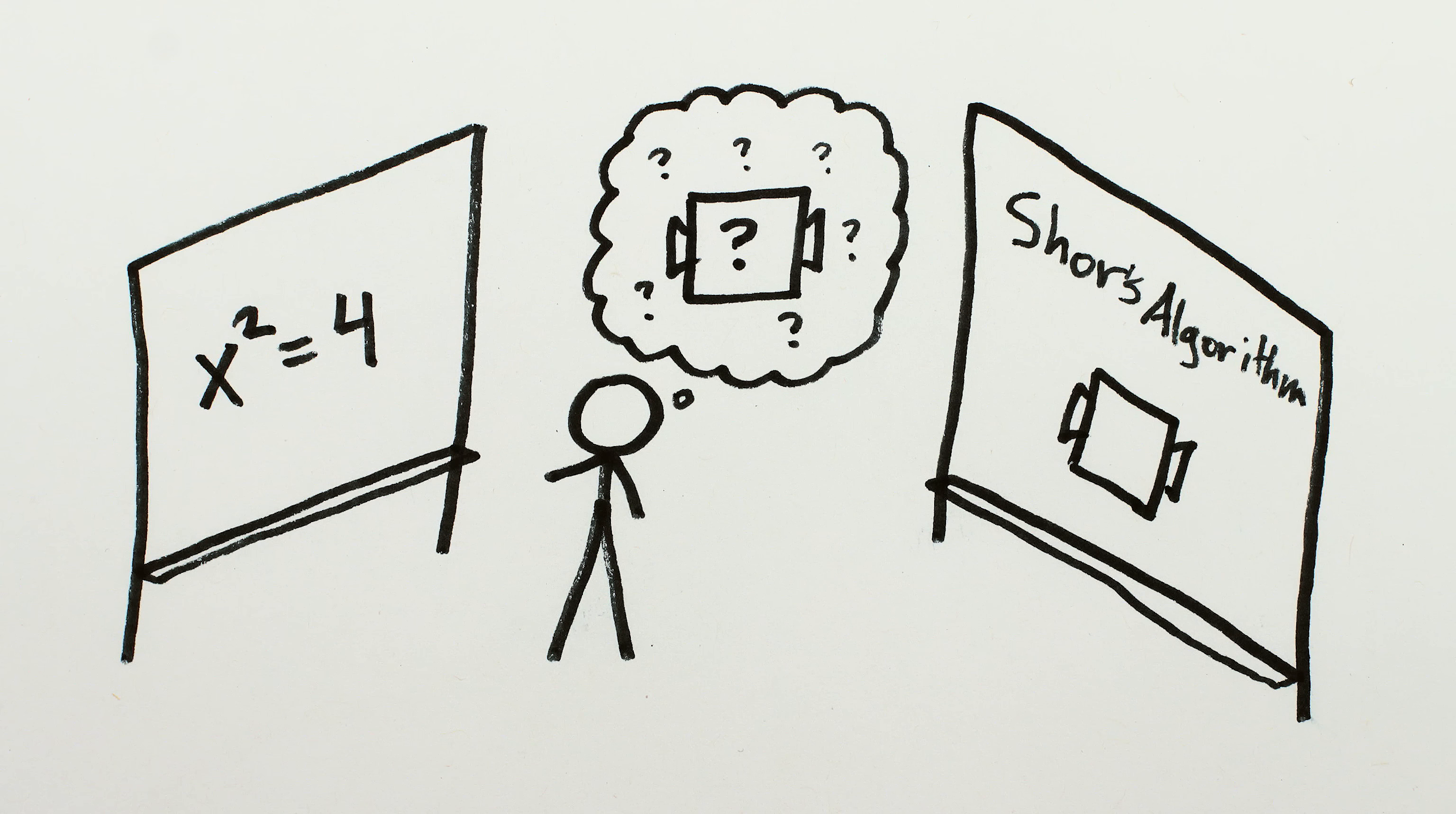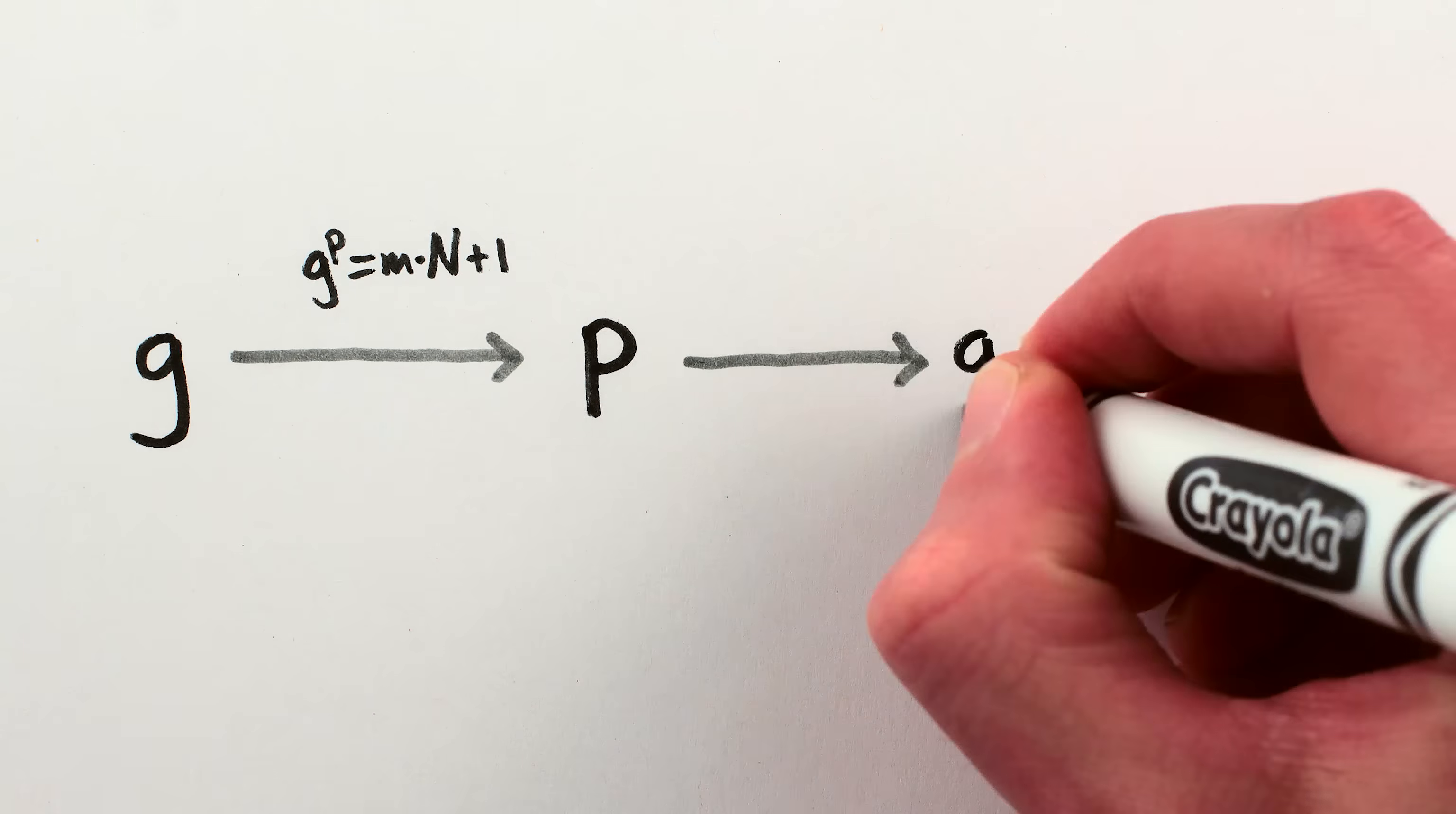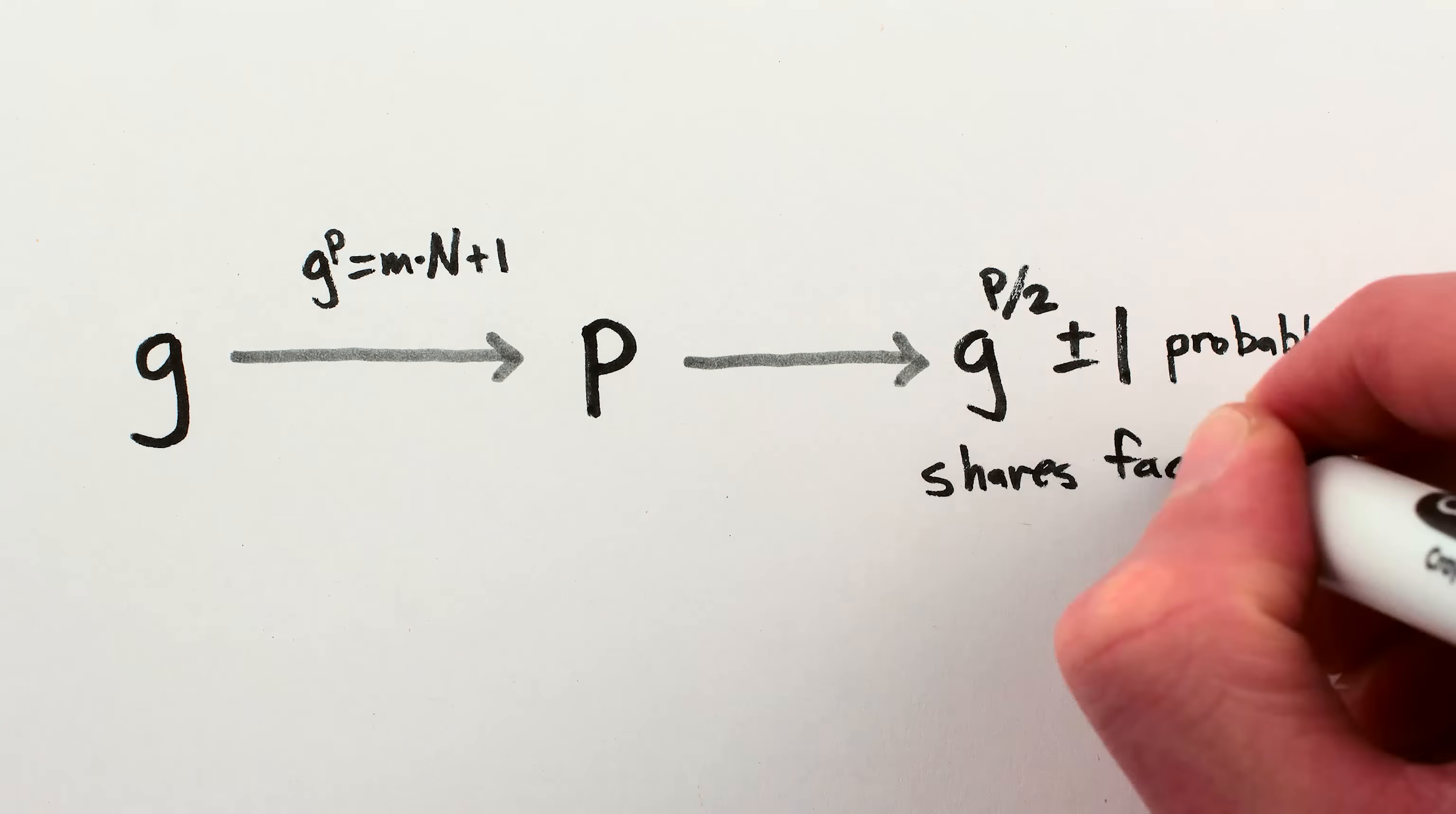Well, actually, it does it for the problem of finding the power p. Remember, at this point we've made a crappy guess g, and we're trying to find the power p so that g to the p is 1 more than a multiple of n. A p that does that also means that g to the p over 2, plus or minus 1, is very likely to share factors with n, which is what this whole thing is about.